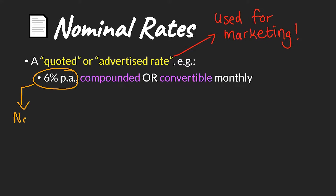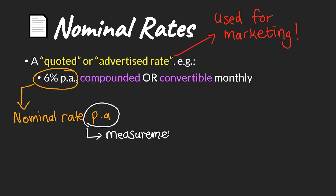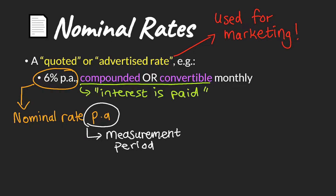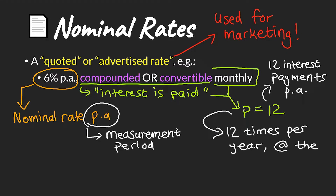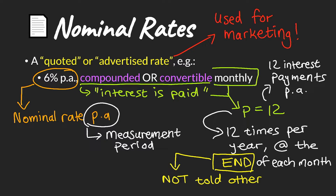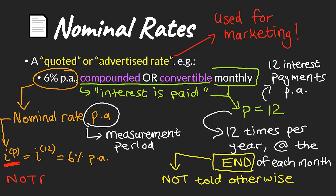We can see in this example that our nominal rate is specified per annum — that's our measurement period — and we are also told that it's compounded or convertible monthly. So all that really means is that interest is paid monthly, which means there are 12 interest payments per annum. So if our measurement period is a year, we have p interest payments in that year, and we can assume that these interest payments are made at the end of each month because we are not told otherwise.